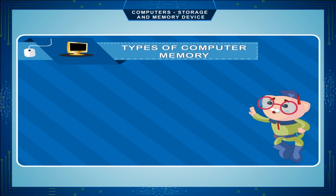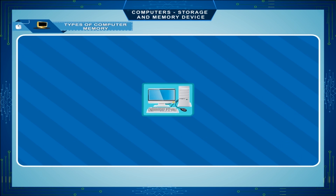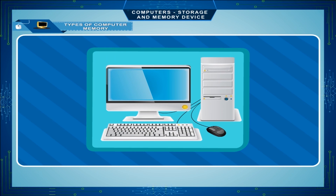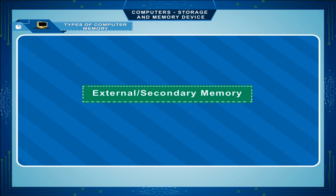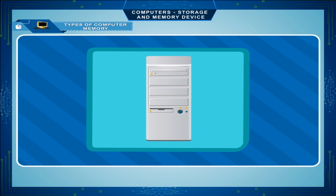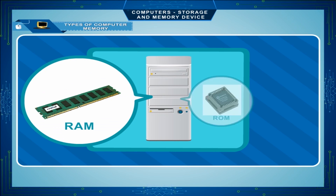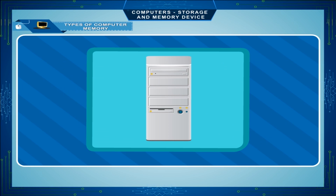There are two types of computer memory: internal or primary memory, and external or secondary memory. Primary memory is of two types: RAM and ROM. Storage devices are the secondary memory that store a large amount of data and software permanently.